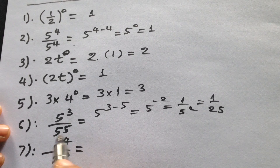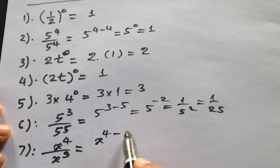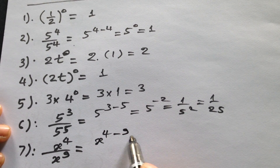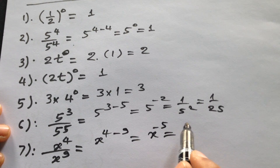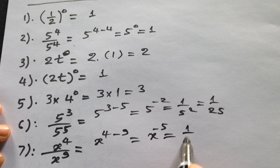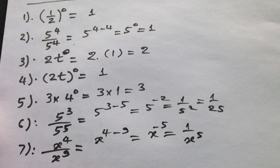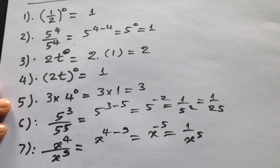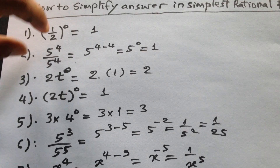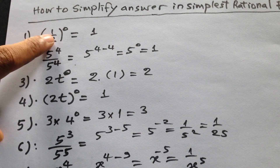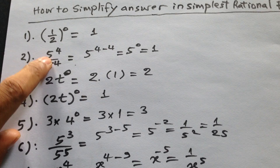And then here, 8 to the power 4 minus 9, it will be 8 to the power minus 5, which is 1 divided by 8 to the power 5. So all of number 4 is 1 — in the rational form, we take the index in the numerator minus denominator.